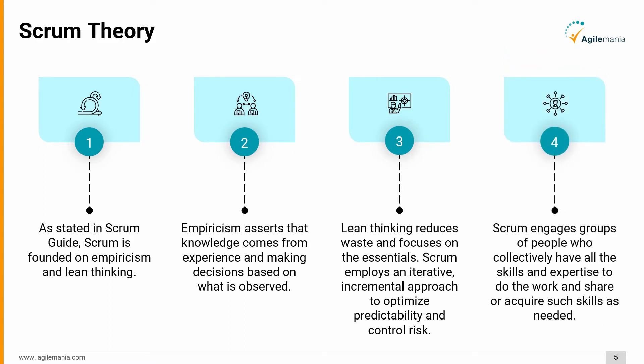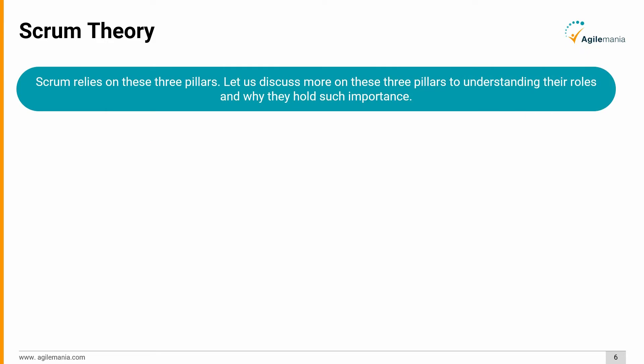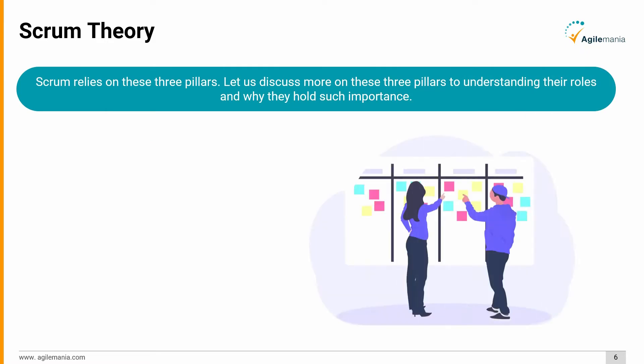Scrum employs an iterative incremental approach to optimize predictability and control risk. Scrum engages groups of people who collectively have all the skills and expertise to do the work, and share or acquire such skills as needed. Scrum relies on three pillars, which we will now discuss in detail.